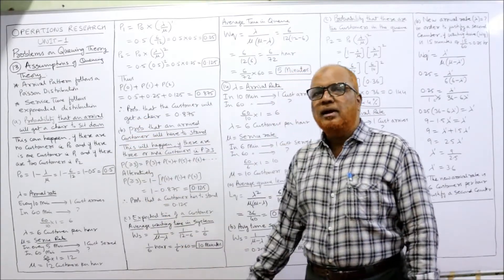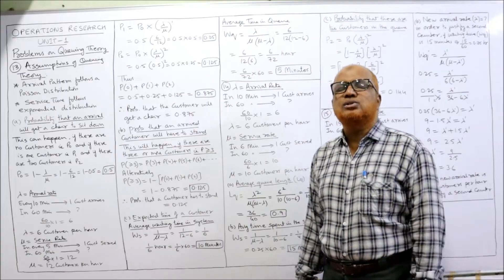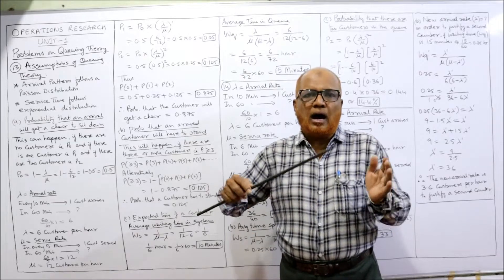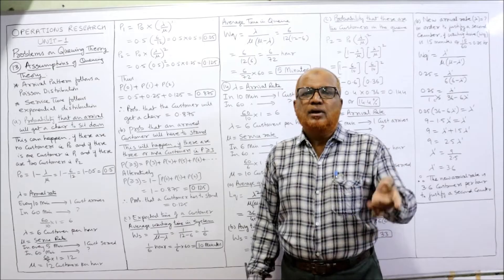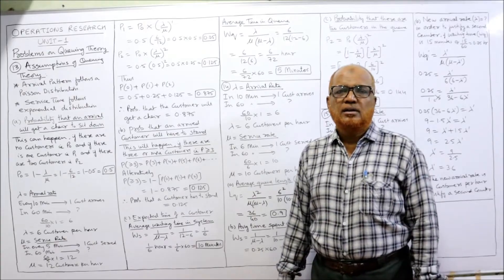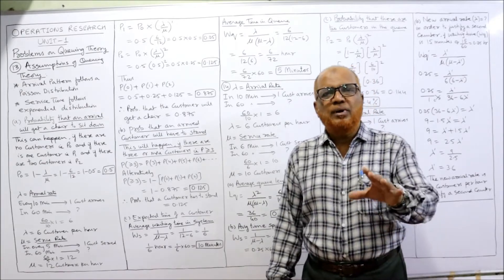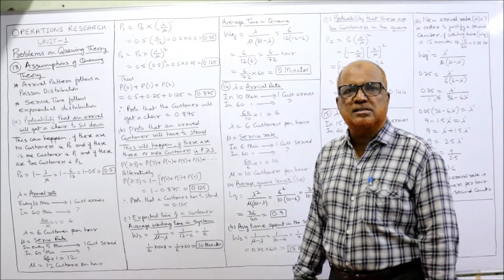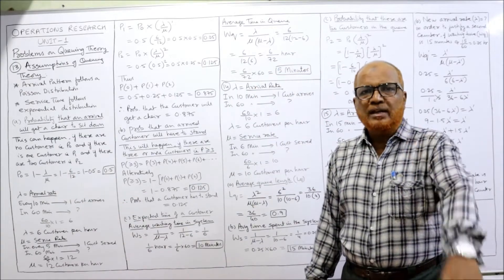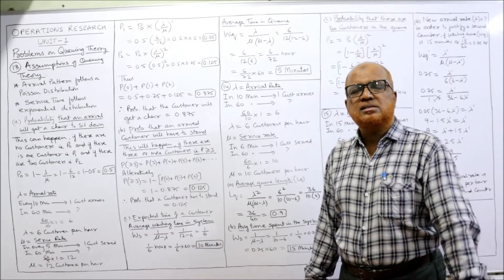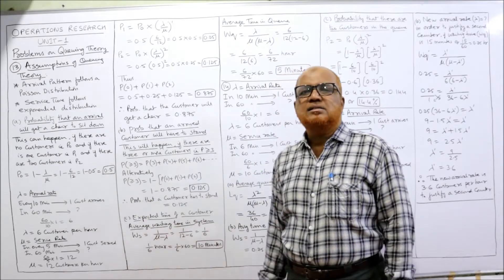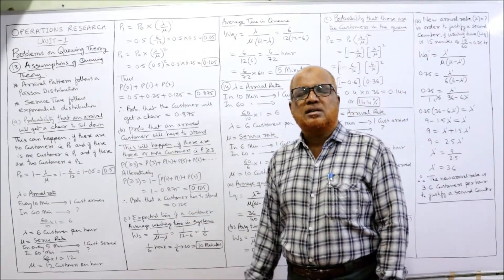Now find the probability that an arrival will get a chair to sit down. Two chairs exist apart from the service counter. We need lambda and mu. Lambda is the arrival rate: one customer every 10 minutes, so in 60 minutes, 60/10 = 6 customers. Lambda = 6 customers per hour.